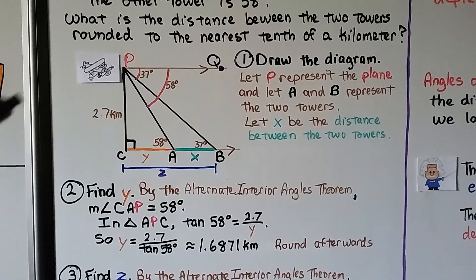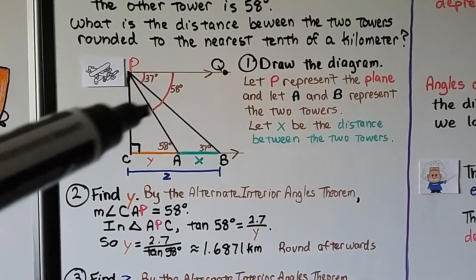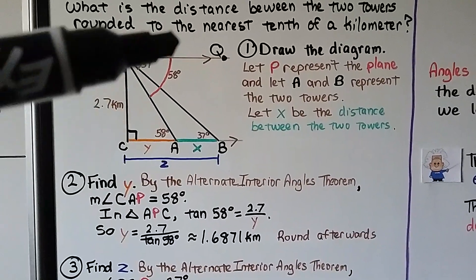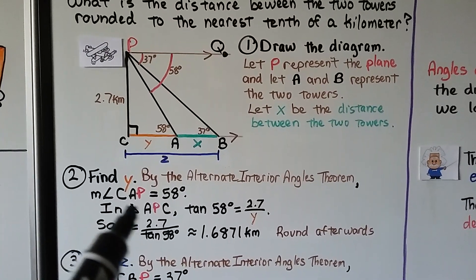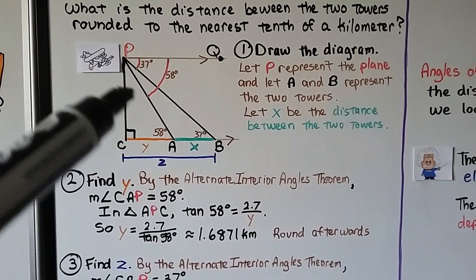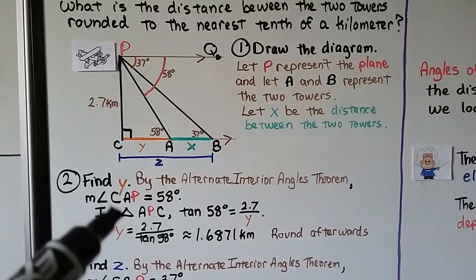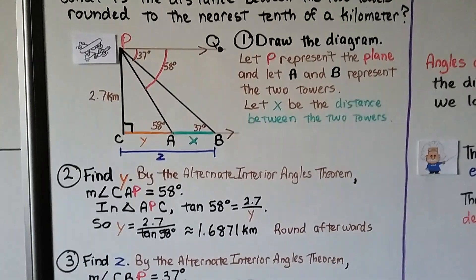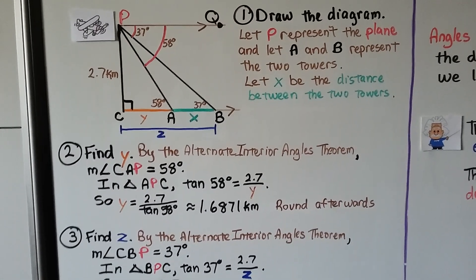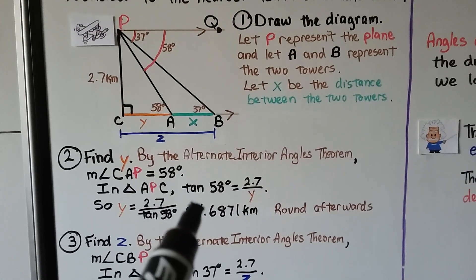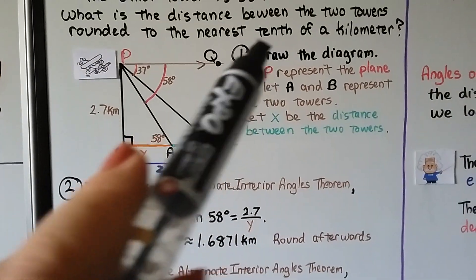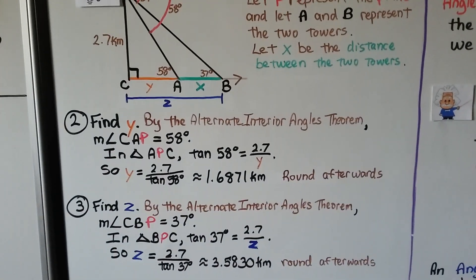First we find Y. By the alternate interior angles theorem, if the angle of depression is 58 degrees, then angle CAP is also 58 degrees. In triangle APC, tangent of 58 degrees equals 2.7 over Y, so Y equals 2.7 over tangent of 58 degrees, which is approximately 1.6871 kilometers. We'll keep this unrounded and round at the end.